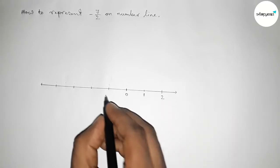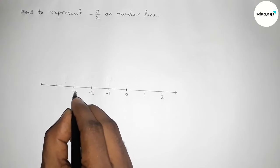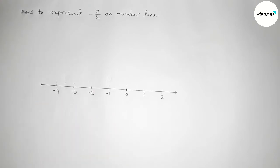Now this side will be 1, 2, and continuous. And this side minus 1, minus 2, minus 3, minus 4, and continuous.